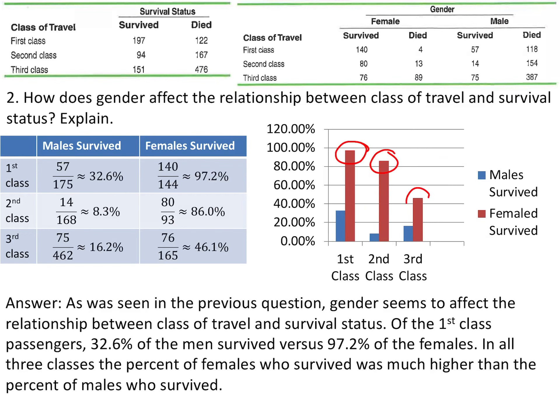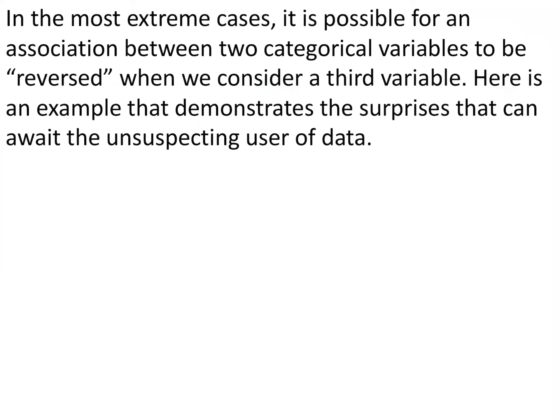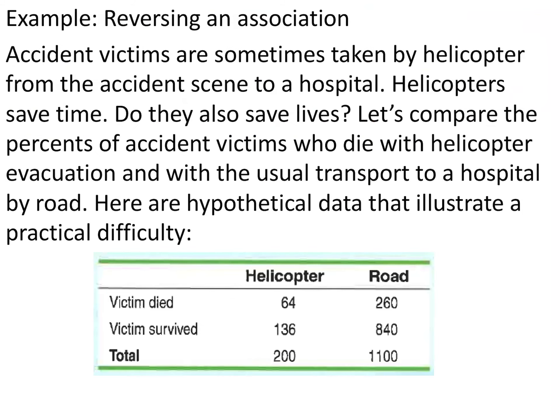In the most extreme cases, it is possible for an association between two categorical variables to be reversed when we consider a third variable. Here is an example that demonstrates the surprises that can await the unsuspecting user of data.